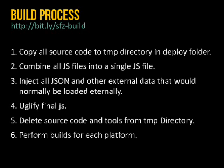Fifth, I delete source code and tools from the temp directory — including that PHP file that comes with Impact and the original library files. Now that I have the minified version, I don't need any of that anymore. Last, I perform the actual platform builds: I copy the temp directory to a web build folder, modify it for the web build, then copy it to Windows 8, and down the chain for all platforms.